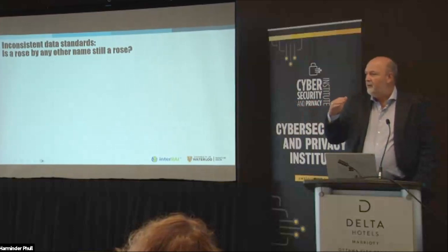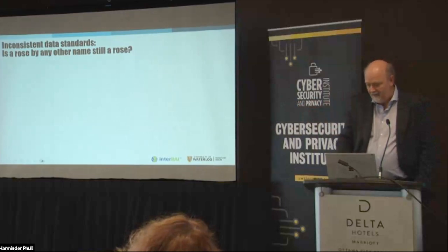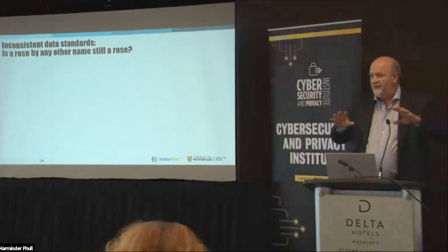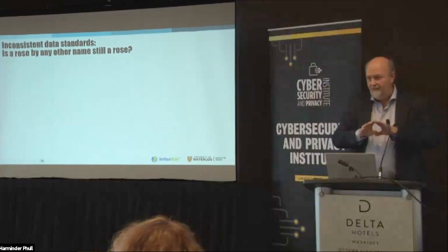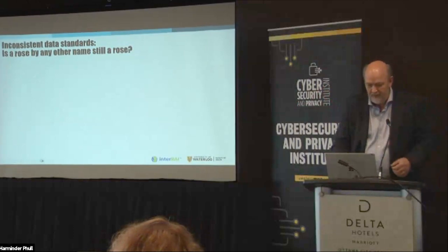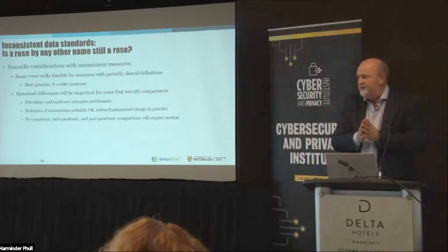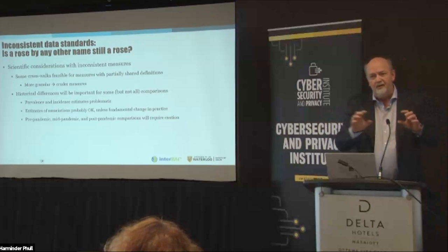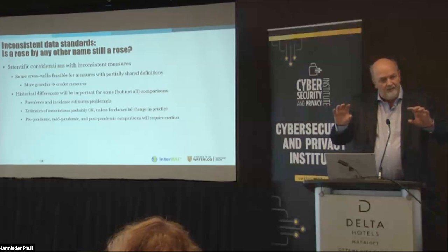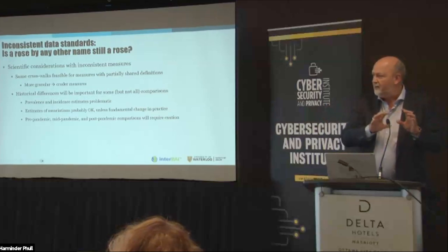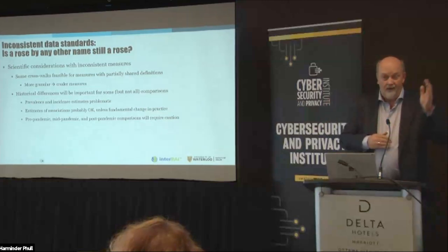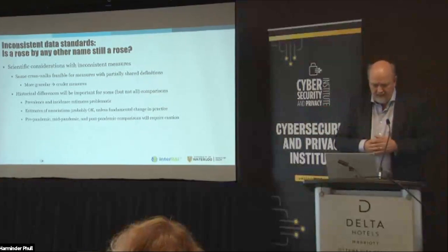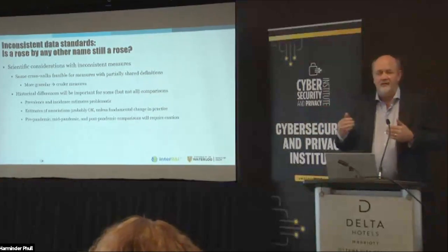The next factor is inconsistent standards where there's not a data gap. There's an idea that we can measure things in a whole bunch of different ways and, through the magic of computer science, suddenly have equivalent measures — that we don't necessarily need data standards. Well, there are scientific considerations around this. In some cases you might be able to create crosswalk comparable measures from different items measuring a concept, but you're always going to convert to a cruder measure — either a more simplistic response set, or essentially any problem versus no problem — and you lose granularity in that kind of context.